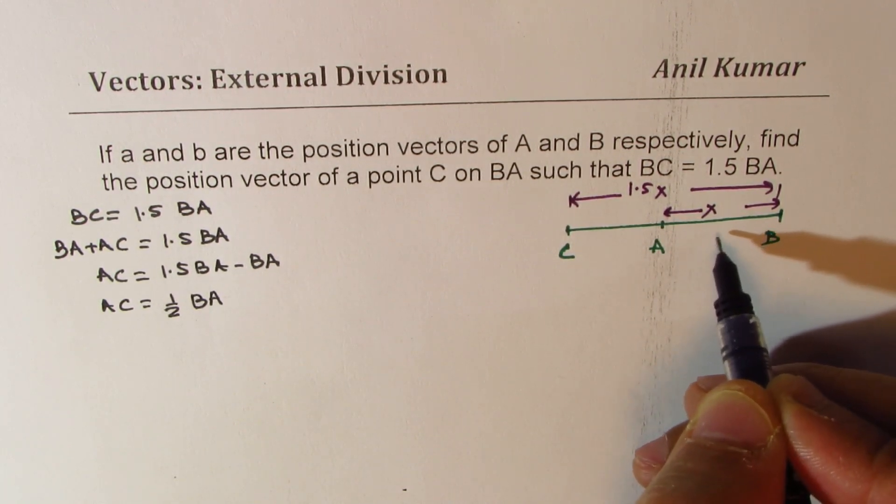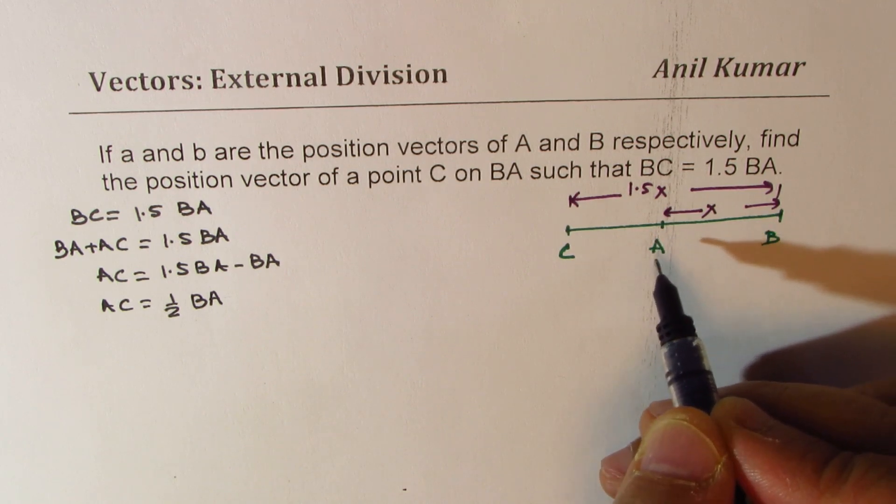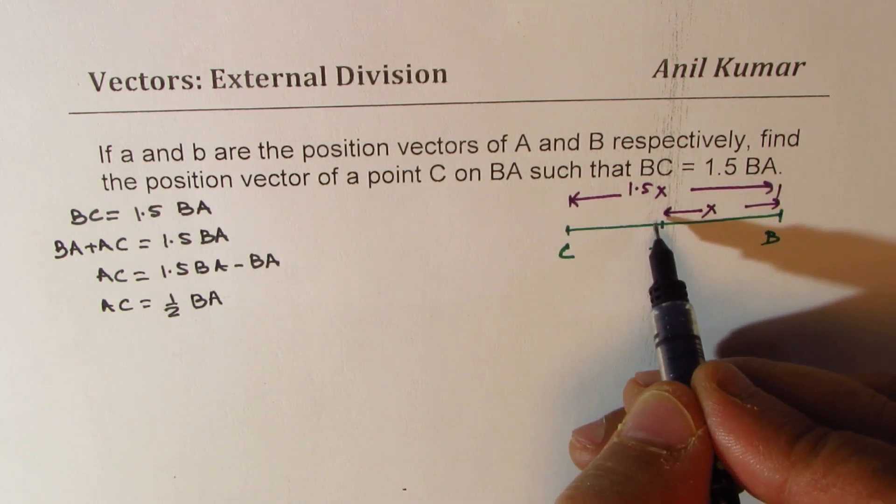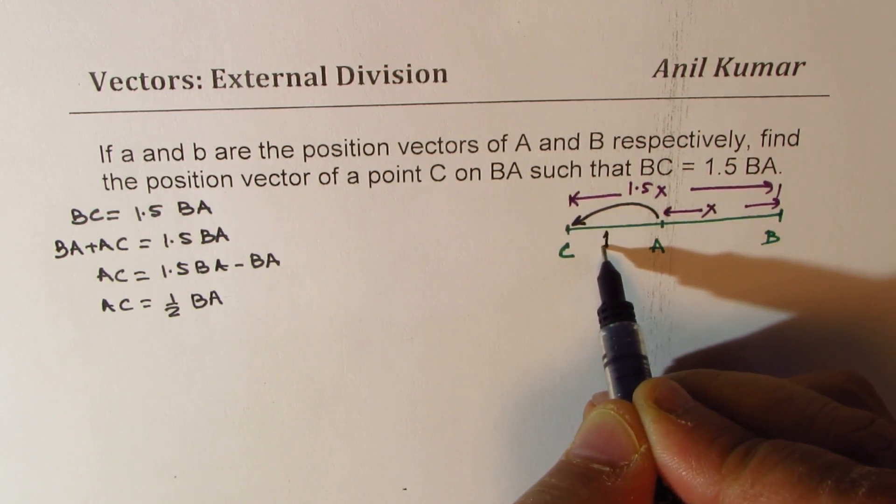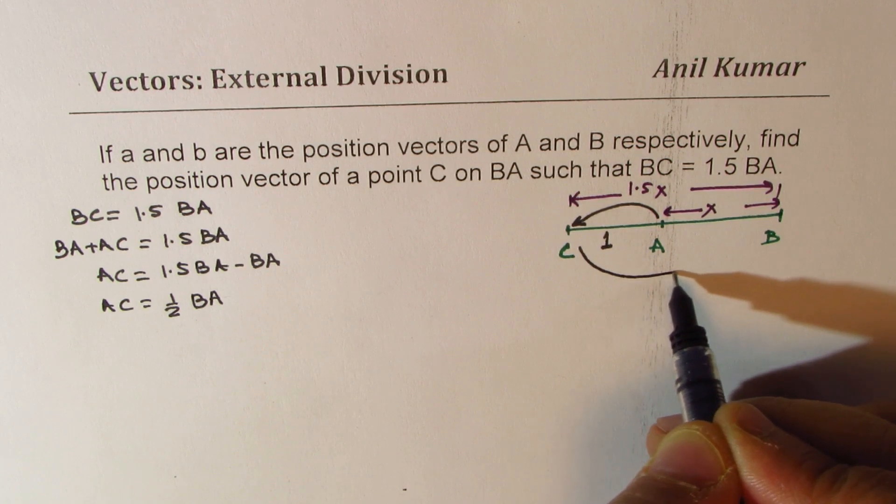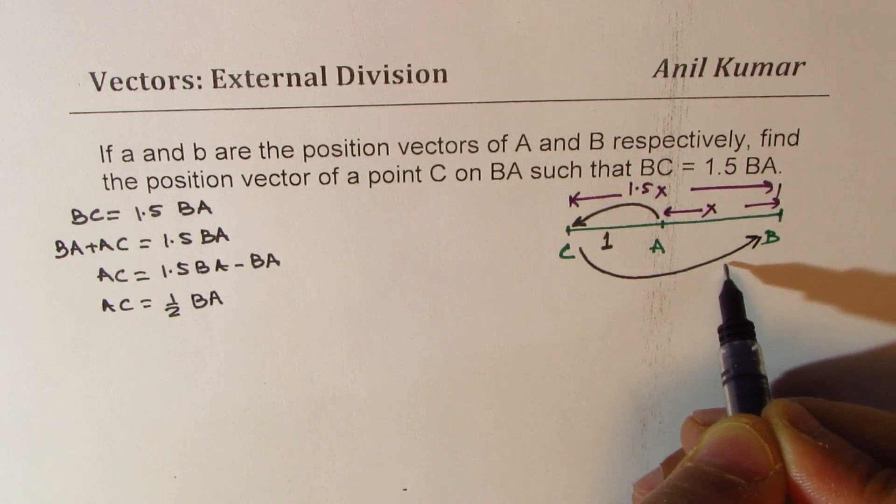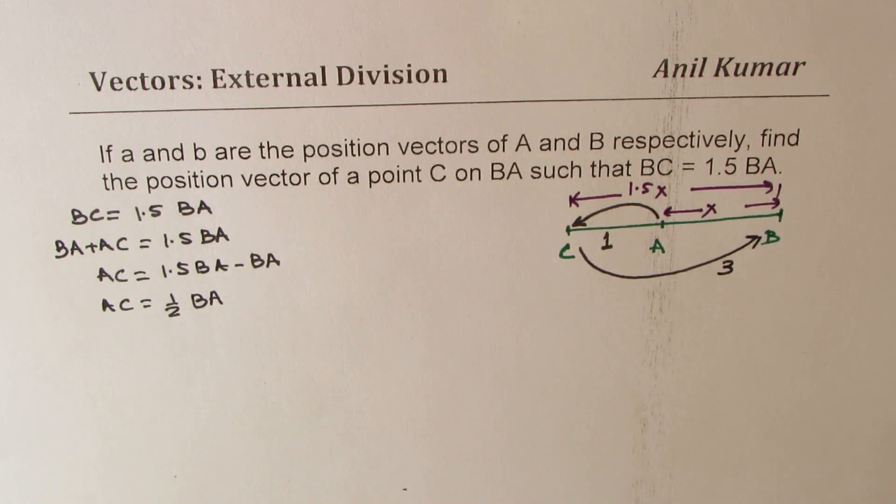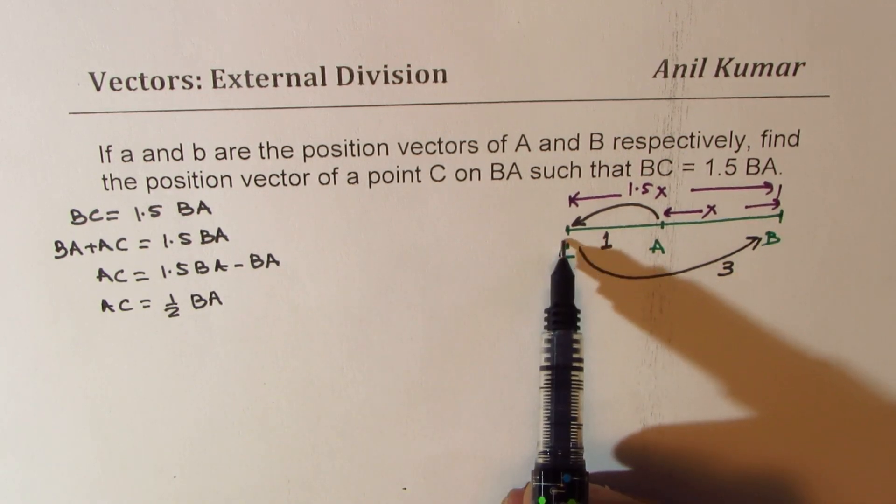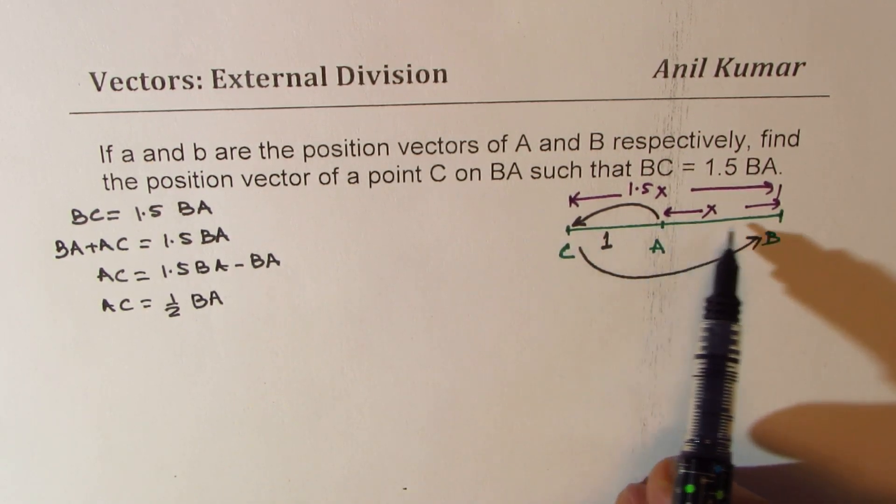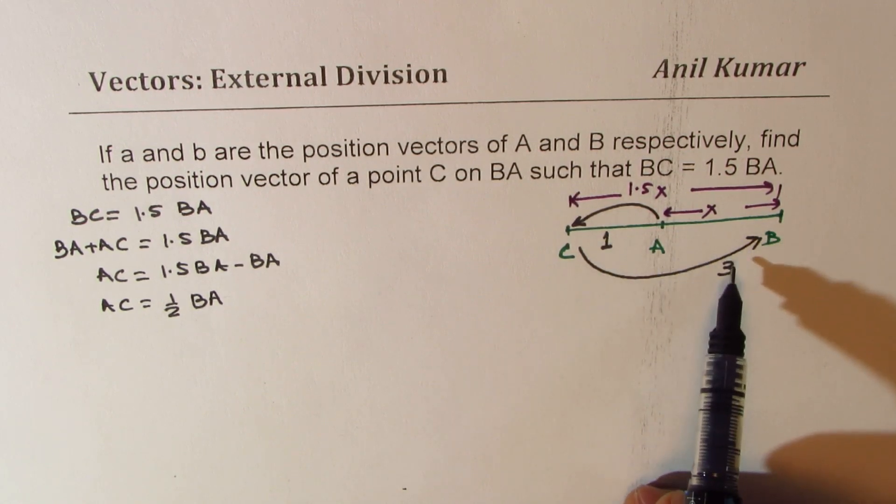So that means there could be three equal divisions. It could be written as, from A to C, if the distance is 1 unit, then from C to B, it will be 3 units.